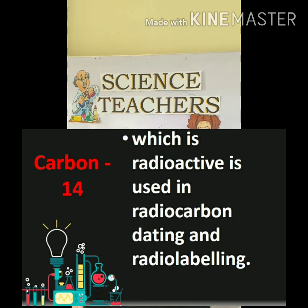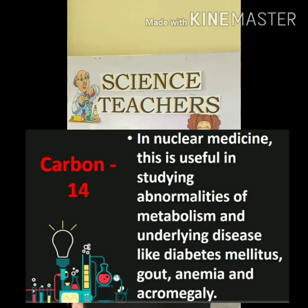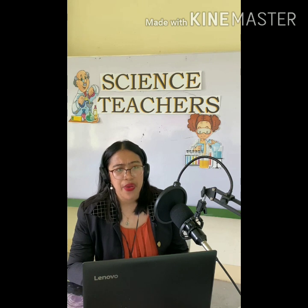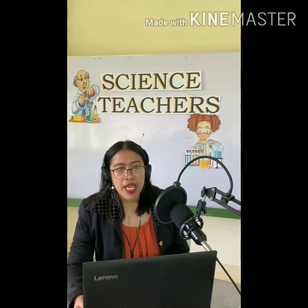The third isotope of carbon is carbon-14. Like the other isotopes, carbon-14 is also radioactive in nature. It is used in radiocarbon dating and radiolabeling. In nuclear medicine, it is useful in studying abnormalities of metabolism and underlying diseases like diabetes mellitus, gout, anemia, and acromegaly. There are a lot of applications of the different isotopes of different elements — we have hundreds of elements in our periodic table, each with their own isotopes.